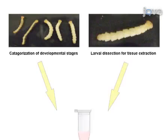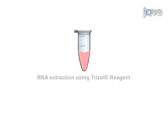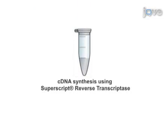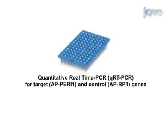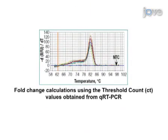As a second step, RNA is extracted from tissues and developmental stages using TRIzol reagent, which is then used as a template to generate the first strand cDNA. Following the synthesis of first strand cDNA, quantitative RT-PCR is performed. Results are obtained showing differential expression of the target gene in various larval tissues and developmental stages, based on fold-change data obtained from the cycle threshold values post-quantitative RT-PCR amplification.